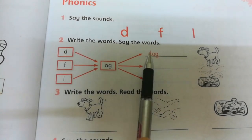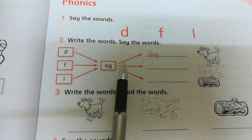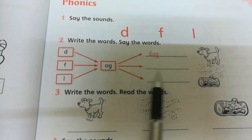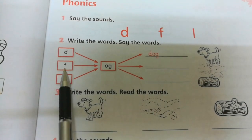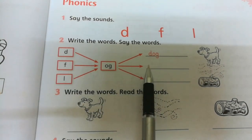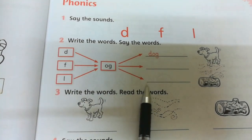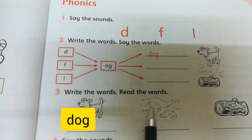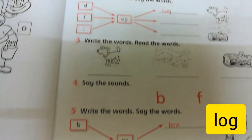D-og: dog. F-og: fog. L-og: log. D-og: dog. F-og: fog. L-og: log. What is it? It's a dog. What is it? It's a fog. What is it? It's a log. Now look at this letter.